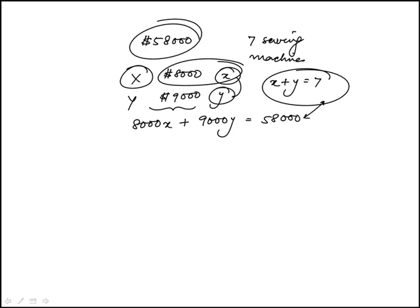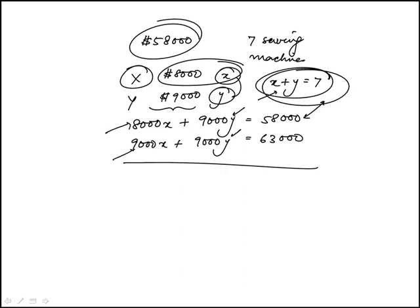These are the two linear equations we have and we need to solve for X. I'm going to multiply the first equation by 9,000 so that the Y terms become identical, and I can subtract the second equation from the first. That would eliminate that term.